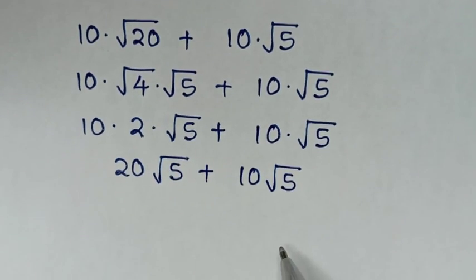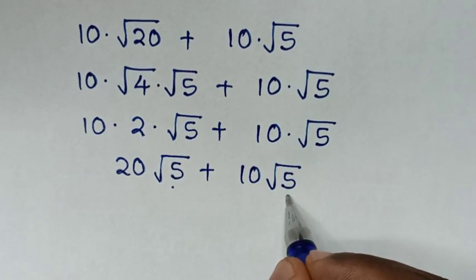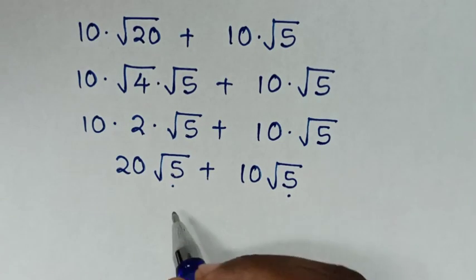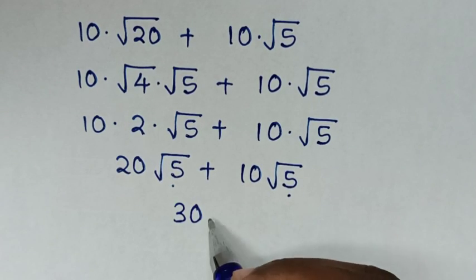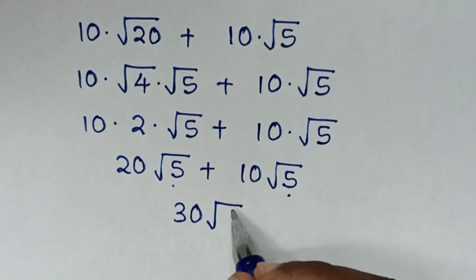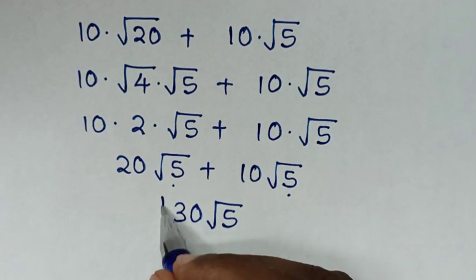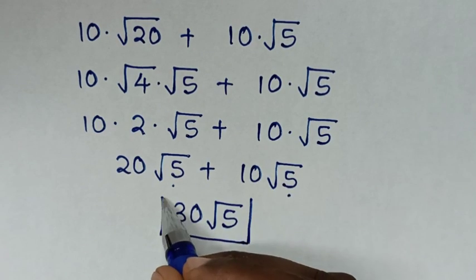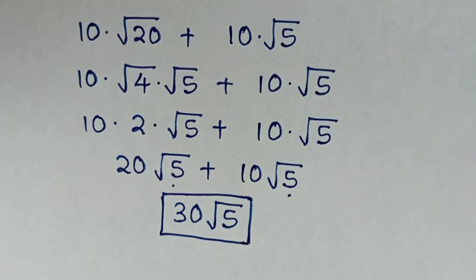Now, square root of 5 is common. So, I'll take 20 plus 10 is 30, times square root of 5. Therefore, 30 square root of 5 is our final answer.